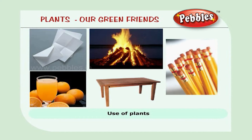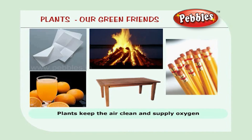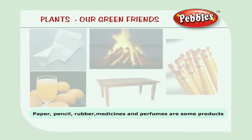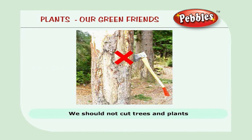Let us see the uses of plants. Plants are useful in many ways. They provide food and fuel. They keep the air clean and supply oxygen. Paper, pencil, rubber, medicines, and perfumes are some of the products made from plants. We should not cut trees and plants. We must always conserve them. I will grow trees in my home.